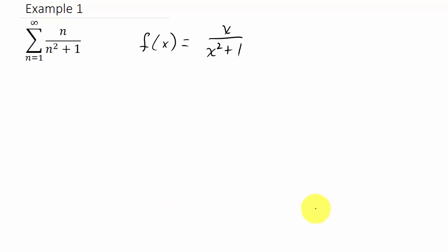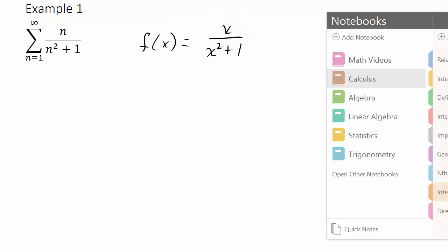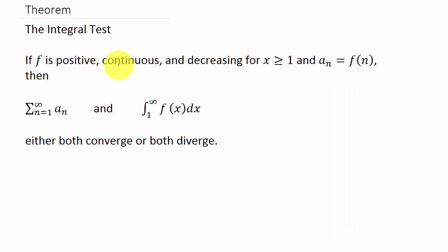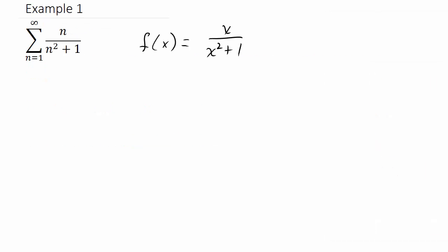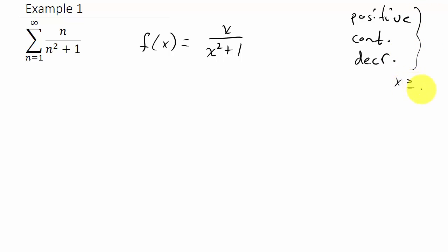So what does this function f have to do? Looking back at the theorem, it has to be positive, continuous, and decreasing for x greater than or equal to 1. We need to test and see if it fits those conditions. We can use the first derivative test, which will tell us if it's decreasing.